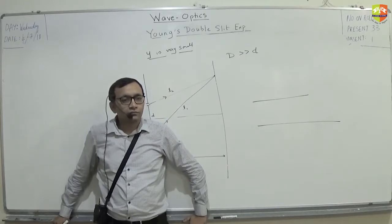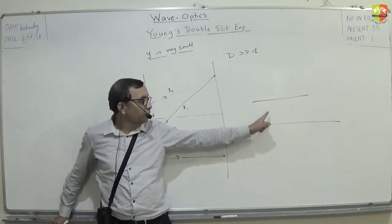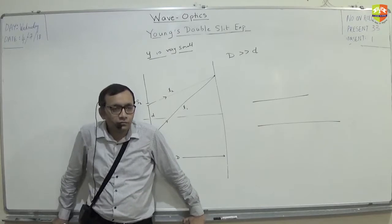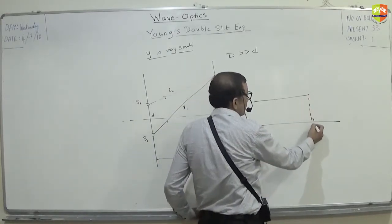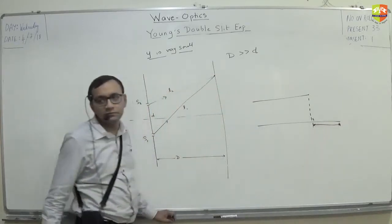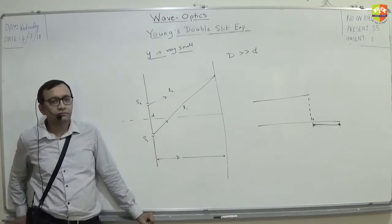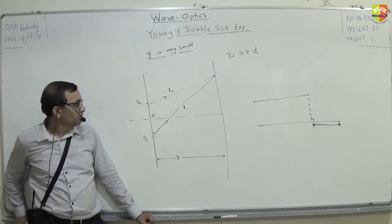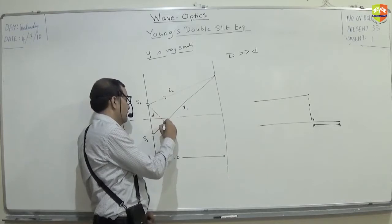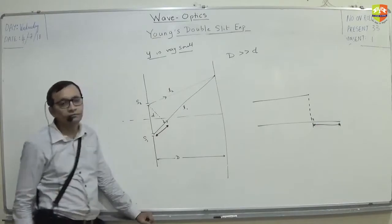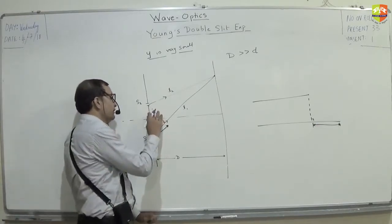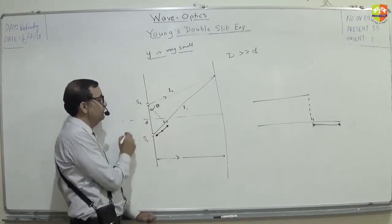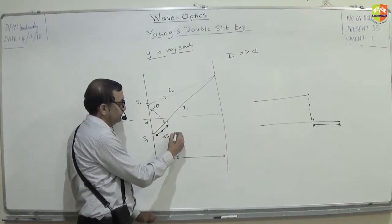To find the differential length between the two parallel rays, you drop a perpendicular from S2 to the other ray, and then measure only that length — that is the path difference. If this angle is θ, and the slit separation is small d, then this distance will be d·sinθ.